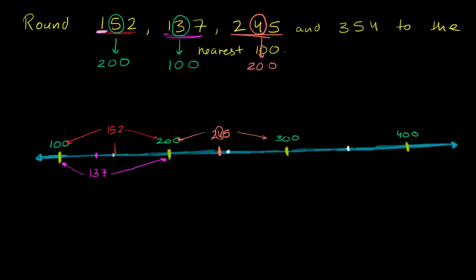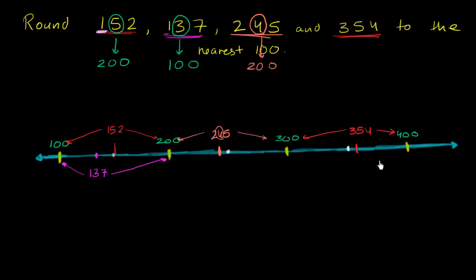Now let's think about 354. If we were to plot that — this is 350, so 354 might be right over here. So if we rounded down we would go to 300; if we rounded up we would go to 400. This is all about finding the multiple of 100 that 354 is closest to.